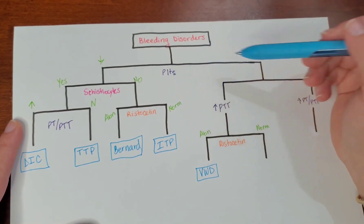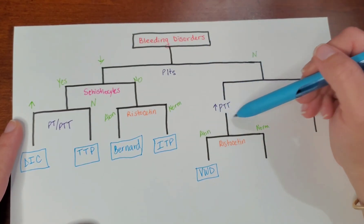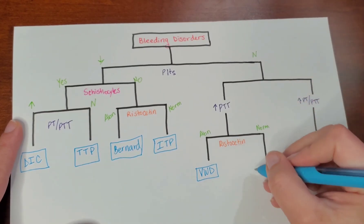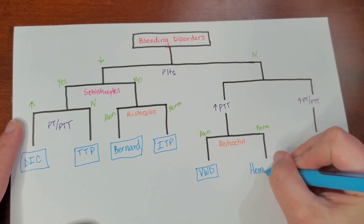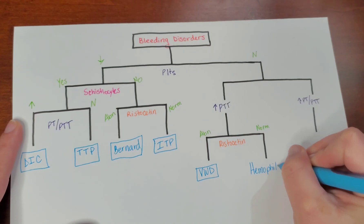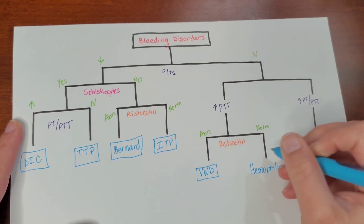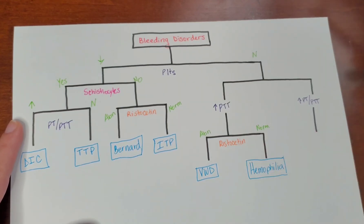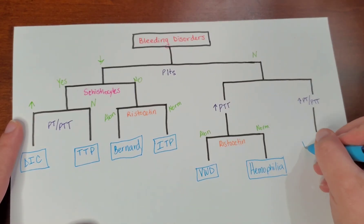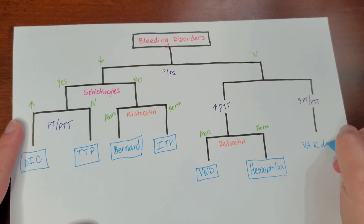And again, normal platelets, increased PTT, with a normal ristocetin test, this would be hemophilia. Lastly, if you have normal platelets and an increase of PT and PTT, this is a vitamin K deficiency.